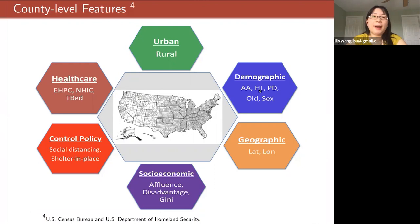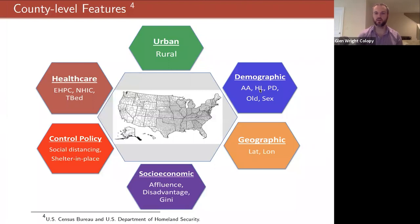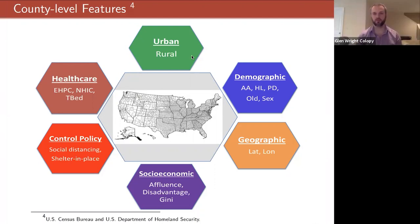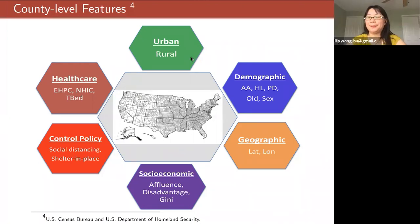I'm curious about the urban versus rural divide — as a creature of the suburbs myself, what's the cutoff that helps you determine that? Actually, we got this urban-rural percentage from the U.S. Census Bureau, so it comes with a percentage and we treat it as a continuous variable. I always like a good continuous variable — so there's no cutoff, it's a continuous variable.